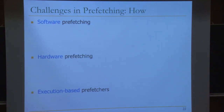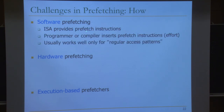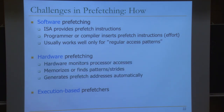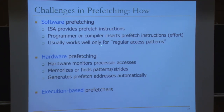Now let's look at how to prefetch. There are three categories: software prefetching, where the ISA provides prefetch instructions and the programmer or compiler inserts them; hardware prefetching, where hardware automatically monitors processor accesses and finds patterns or strides to generate prefetch addresses; and execution-based prefetchers, which can be done in software or hardware. This is a choice between programmer burden versus microarchitect burden.